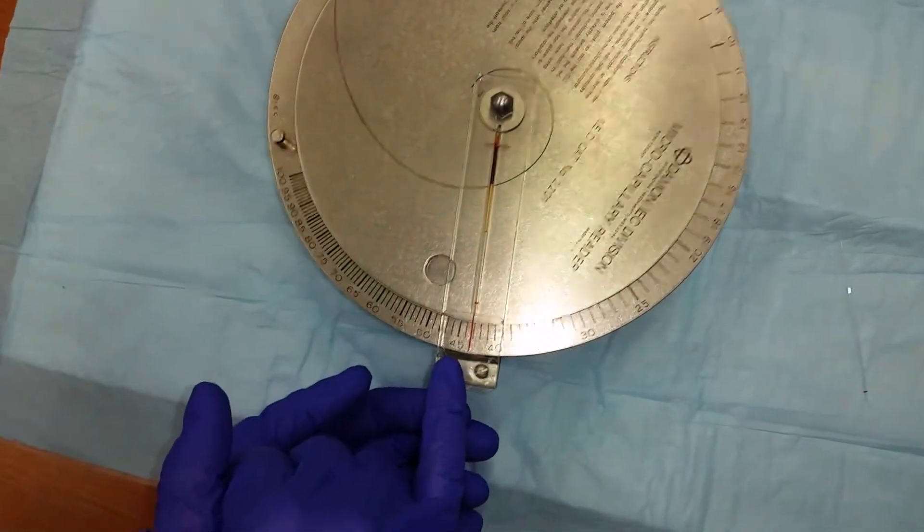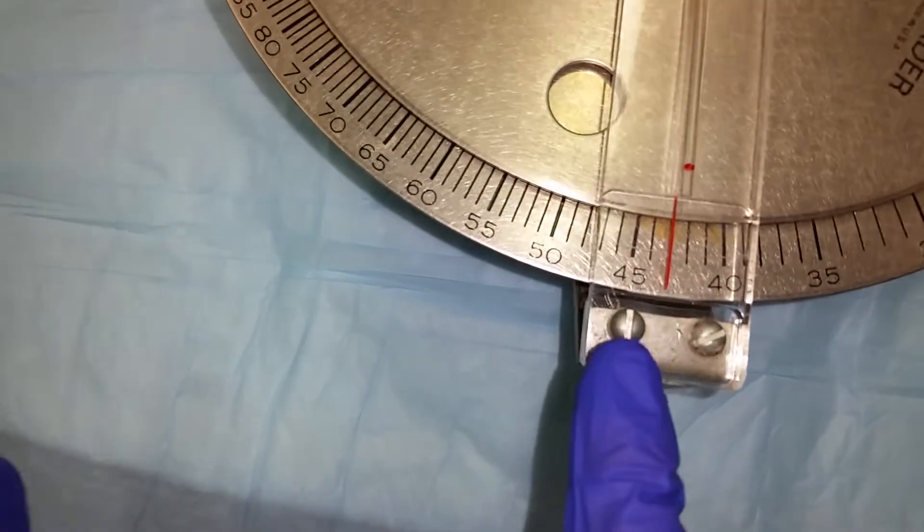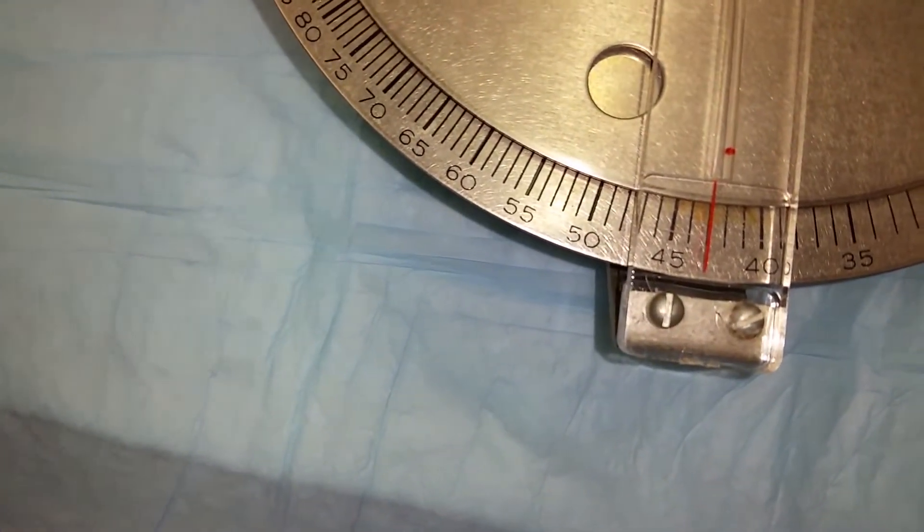The number that you see is the hematocrit, in this case 43%.